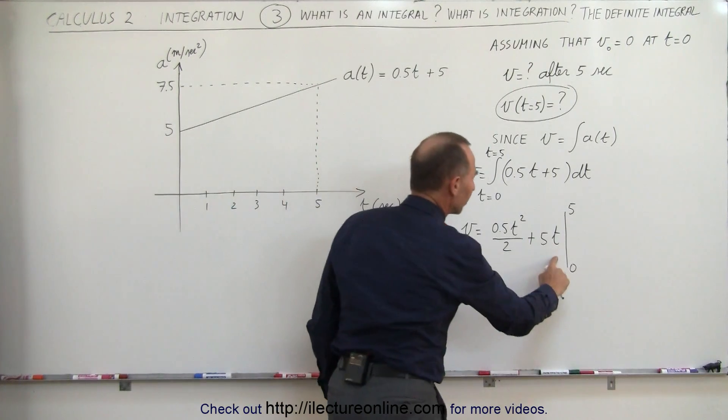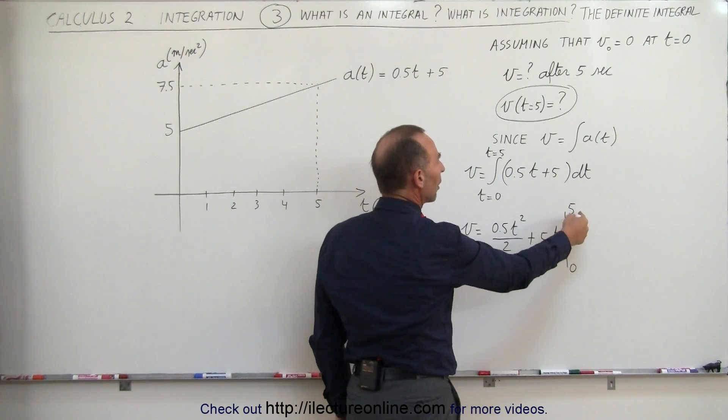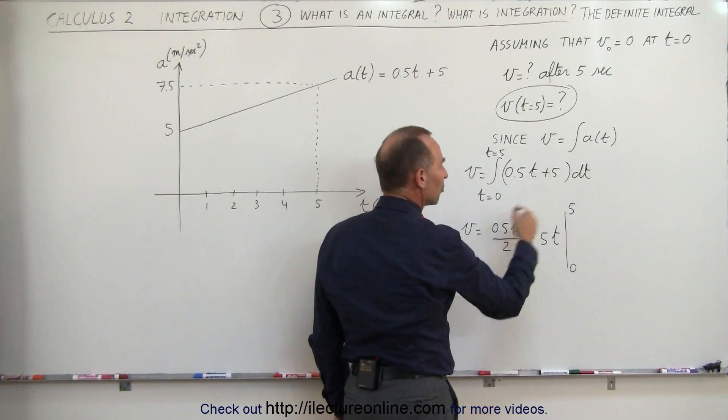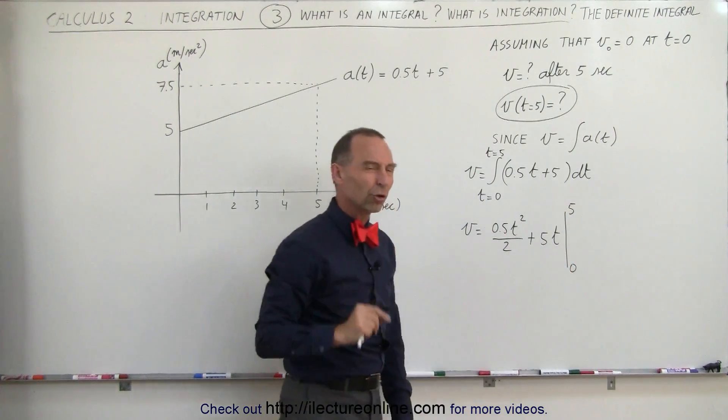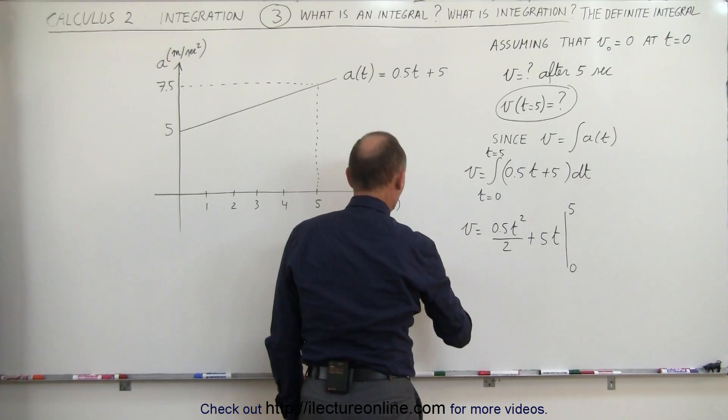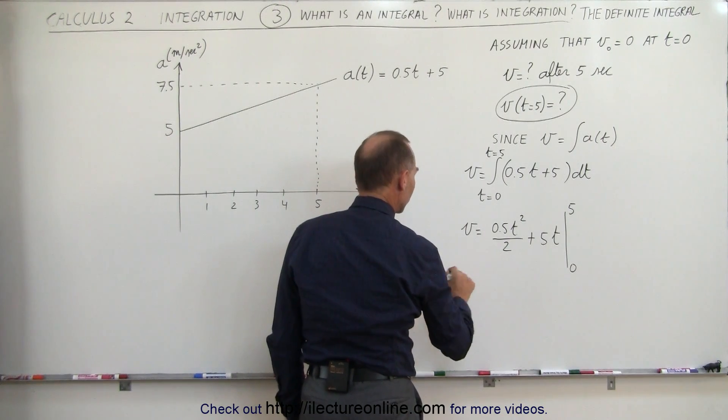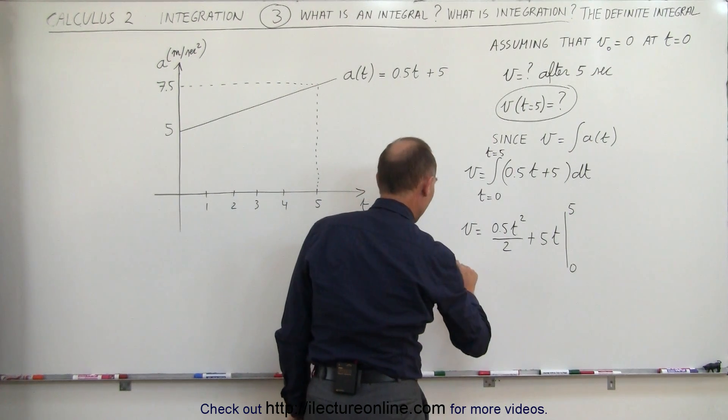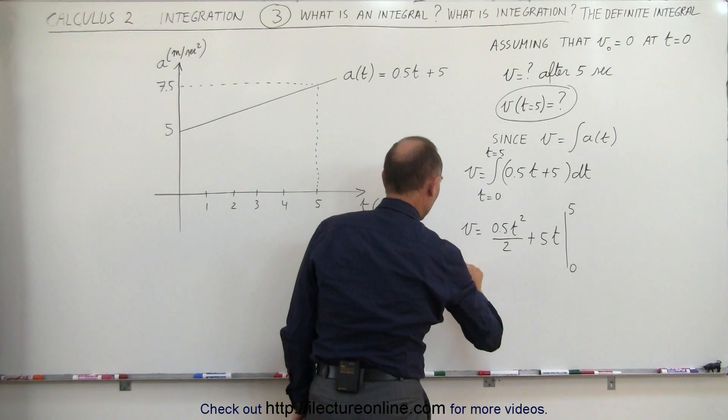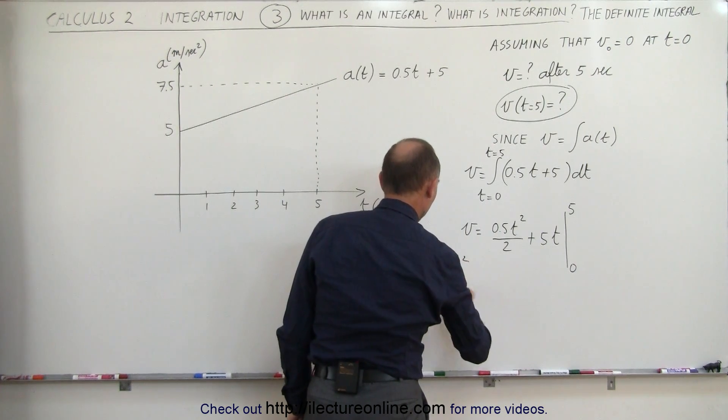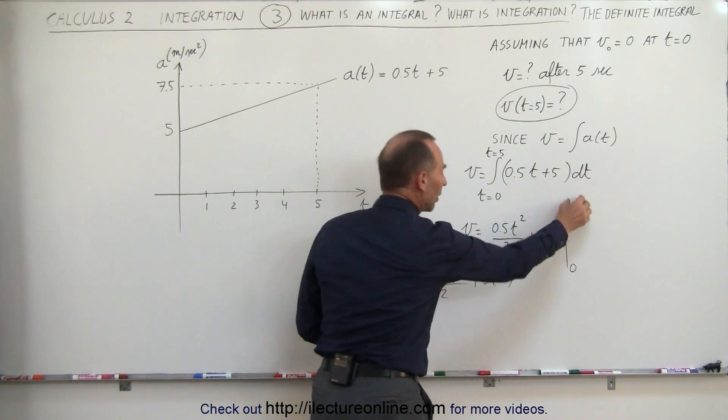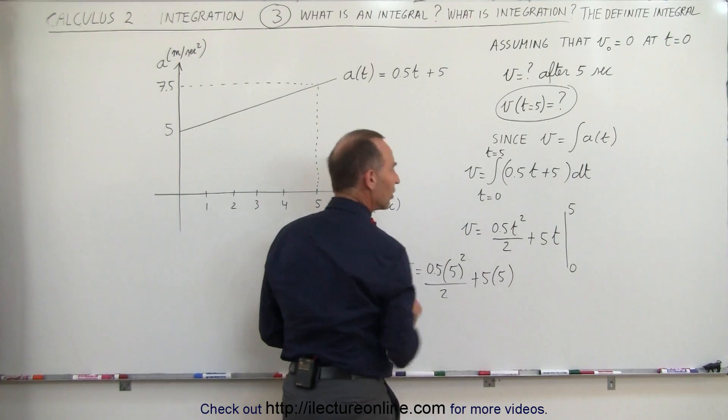How do you evaluate the result here? What this means is that we want to plug in the upper limit, 5 for the value of t, and subtract when we plug in the lower limit. Let me show you what that looks like. So the velocity after 5 seconds is equal to 0.5 times, we plug in the upper limit, that would be 5 squared, divided by 2, plus 5 times 5. So what we did here is we plug in the upper limit, each case we see a t, and then we subtract from that when we plug in the lower limit.